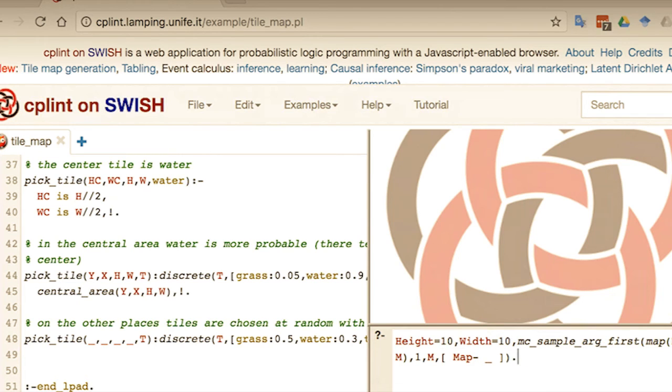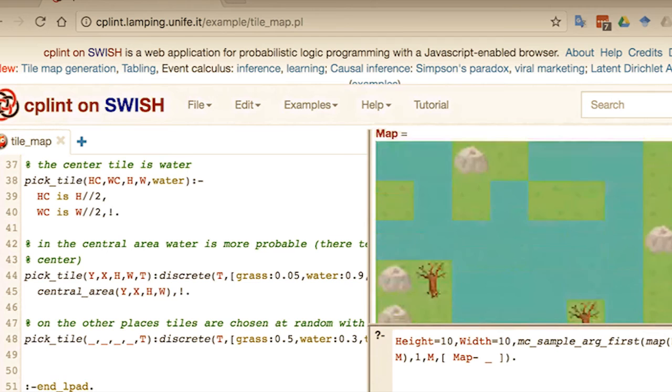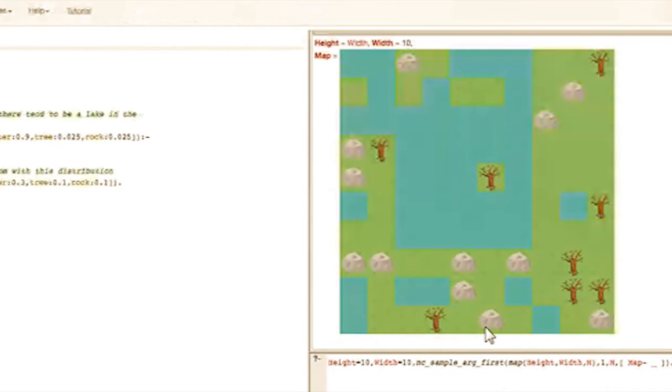So, if you now click on the run button, it will generate a map, which is 10 by 10, and as you can see, the center tends to be occupied by water. Okay, so, what else can we do with CPLint?